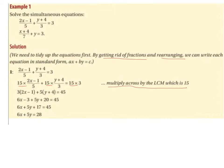Minus 3 and plus 20 combine to give 17. So we have 6x plus 5y plus 17 equals 45. Bringing the 17 over the equal sign gives minus 17, and 45 minus 17 is 28. So now we have 6x plus 5y equals 28, which is in the form ax plus by equals c, with x and y on the left and the constant on the right.